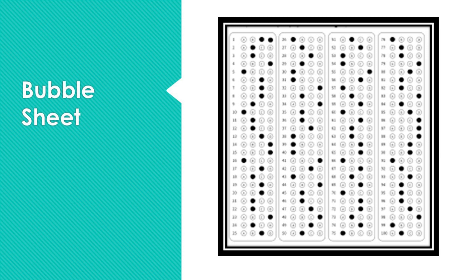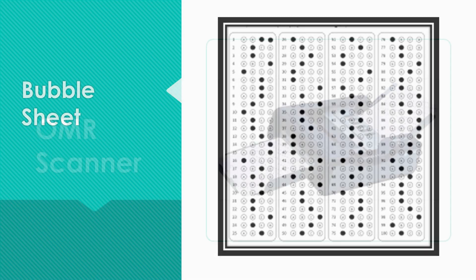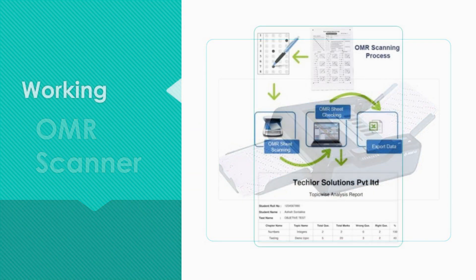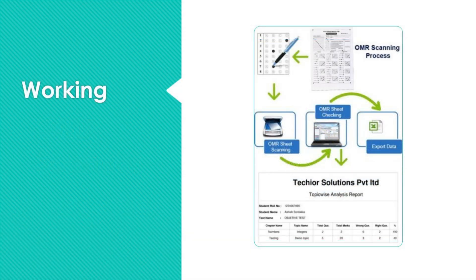OMR has been widely used in education. OMR can handle hundreds of thousands of physical documents per hour and its accuracy is up to 99%. A common example is the use of standardized forms in schools where students have to fill in a predefined mark on the sheet, serving as a mark for the optical mark recognition algorithm.